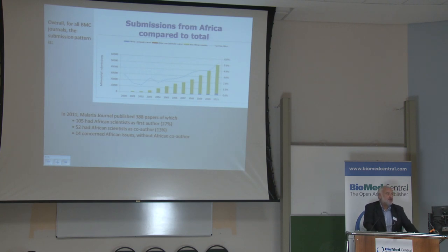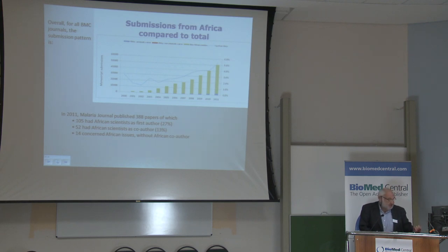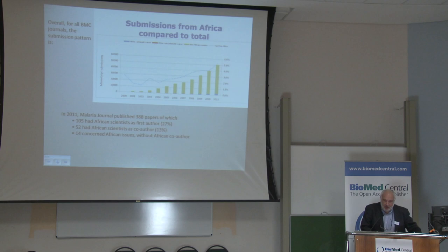I borrowed one of Deborah's slides showing submissions to BioMed Central journals from Africa, which shows a very small proportion. But I did a little bit of counting, and in 2011, out of 388 papers published, 105 had African scientists as first authors — that's 27% of articles published. 52 had African scientists as co-authors, and 14 concerned African issues but without an African co-author. This last point is less worrying than it sounds, as these are usually policy papers written by someone at the World Bank or WHO.